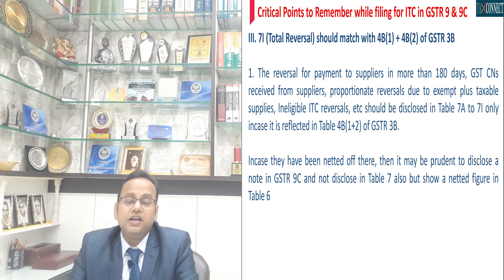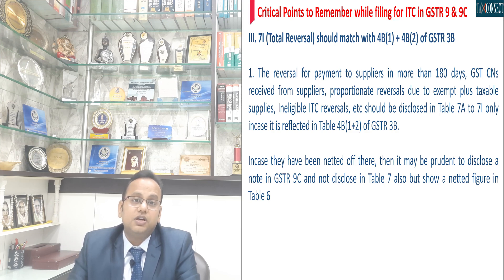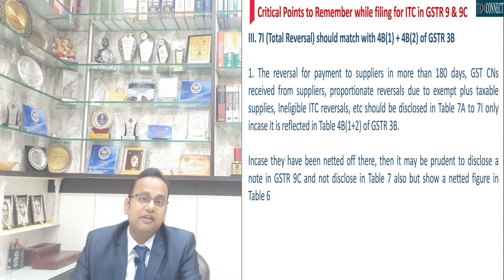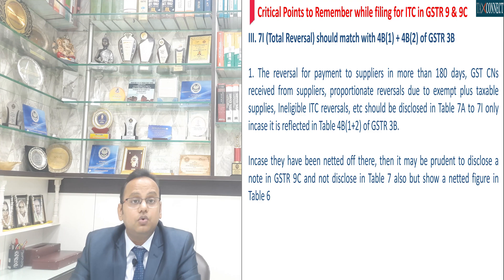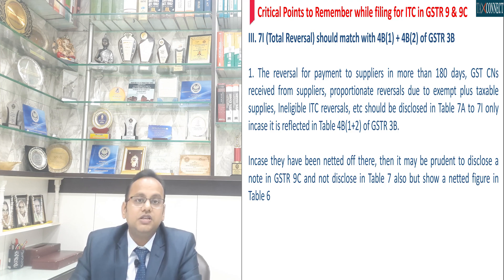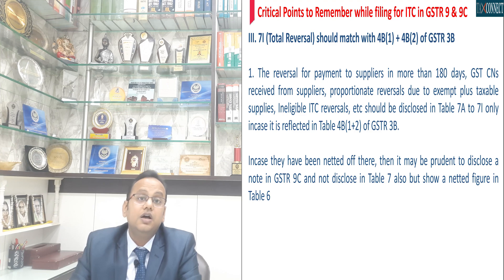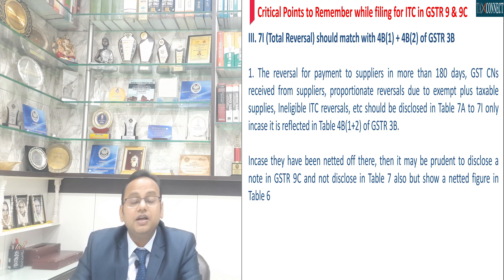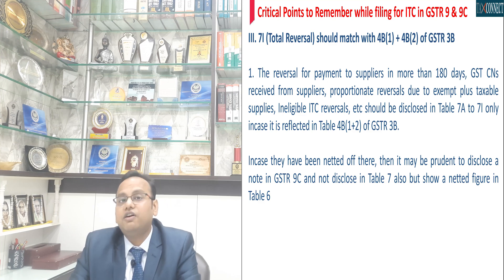Third important point to remember is that the ITC reversals which you report in tables 7A to 7H — the total of which is reflected in 7I — must match the cumulative amount reported in table 4B1 and 4B2 of GSTR 3B filed by you. Now, there can be many transactions which you have netted off in your GSTR 3B under table 4A. For example, if a supplier issues you an invoice and thereafter a GST credit note, you may have netted it off under table 4A of GSTR 3B — although after Circular 170 we know this is not the right approach, but for financial year 21-22 you may have done so.